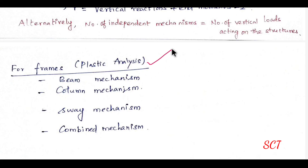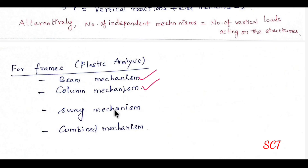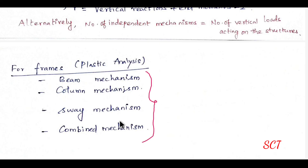Now let's look at the frame. For a frame, we can have a beam mechanism, a column mechanism, and a sway mechanism. If a vertical load acts on the beam, the beam mechanism forms. If a horizontal load acts, a sway mechanism results. Combining these gives the combined mechanism. So there are four possible mechanisms in total.